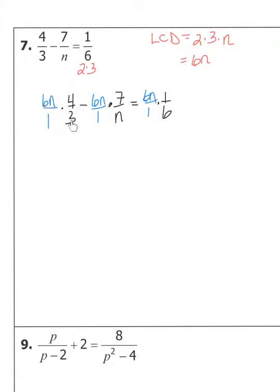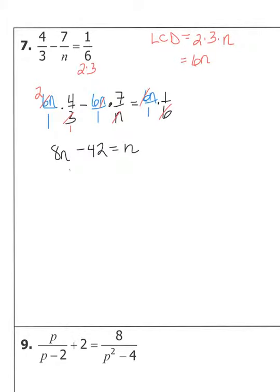For the second term, the n's cancel one for one, leaving negative six times seven, which is negative 42. For the right side, the sixes cancel one for one, leaving n times one, which is n. So we no longer have any denominators. The equation is now 8n minus 42 equals n, which is straightforward to solve.